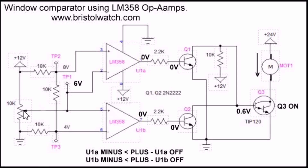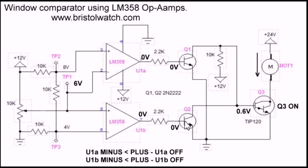Now I have adjusted my 10k potentiometer to six volts. In the upper comparator, the minus input is still less than the positive input, so there's no output and Q1 is off — pulled high by the 10k resistor to 12 volts. For the lower comparator, the six volts on the positive input is higher than the voltage on the negative input, so the lower comparator is also turned off, leaving Q2 off. Now the voltage climbs on these two open circuit collectors, which biases on Q3 and the motor runs. Both comparators have to be turned off together to get the motor to run.